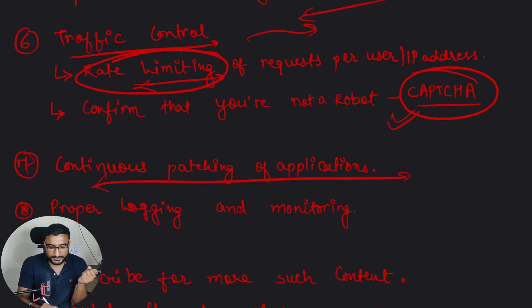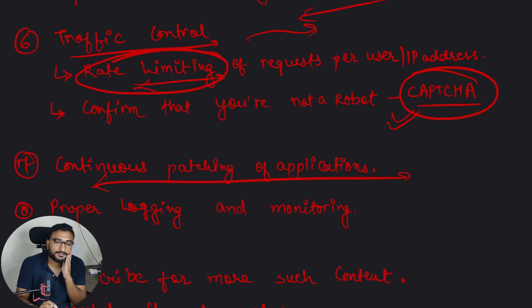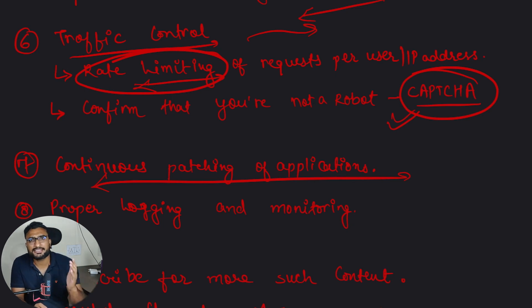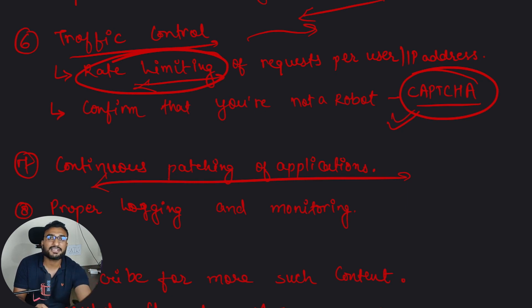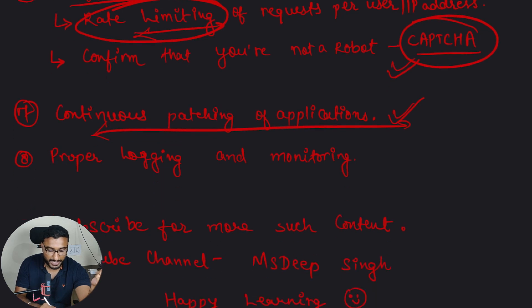Another way to make your application secure is continuous patching. For example, a recently known issue was the Log4j vulnerability in Java applications. Any system running a Java application using Log4j should be immediately patched. You must make sure that applications running on your server are continuously patched so you are not impacted by vulnerabilities or exploits that are exposed publicly.